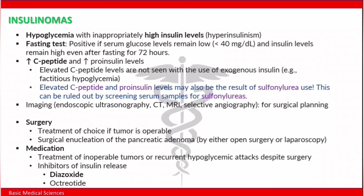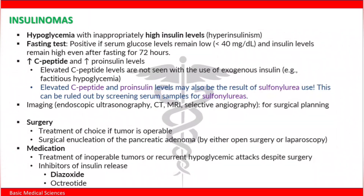Imaging methods include endoscopic ultrasonography, CT, MRI, and selective angiography, which are important for surgical planning. Treatment of choice is surgery — surgical enucleation of the pancreatic adenoma by either open surgery or laparoscopy. Medications are indicated if the tumor is inoperable or if there are recurring hypoglycemic attacks despite surgery. The drugs used are inhibitors of insulin release, including diazoxide and octreotide.